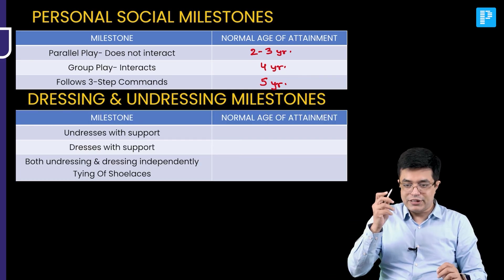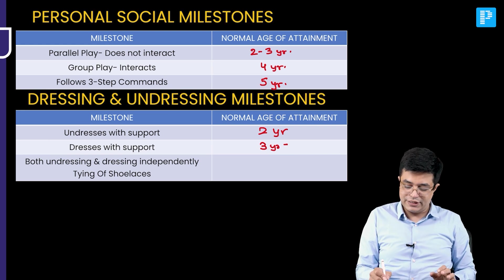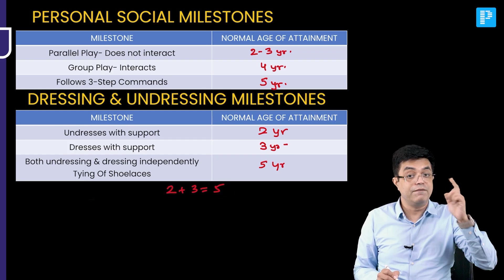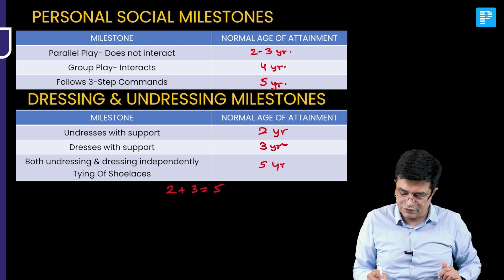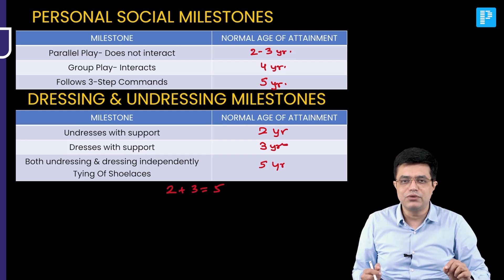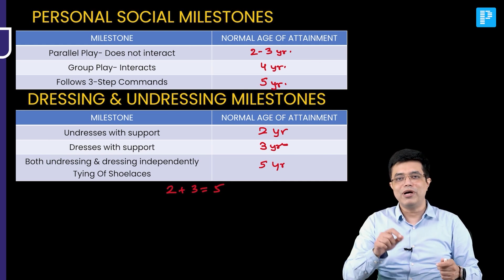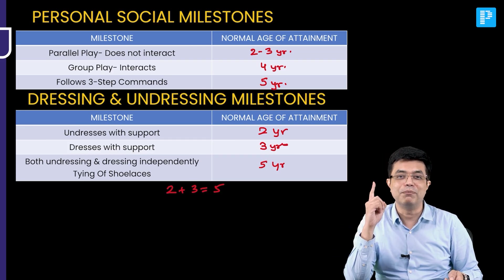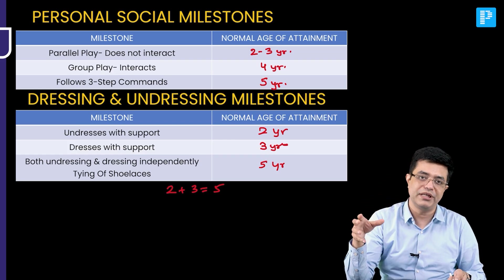Remember: 2 plus 3 equals 5. Undressing with support comes at 2 years of age; dressing with support comes at 3 years of age; and both dressing and undressing independently, plus tying shoelaces, comes at 5 years of age. So: 2 = undressing with support, 3 = dressing with support, 5 = both independently. It's a simple way to remember, but when it comes to MCQ entrance exams — whether NEET UG, NEET PG, FMG, or super-specialty — what matters is that the answer is correct. The destination is more important than the journey.